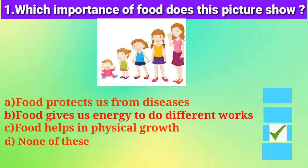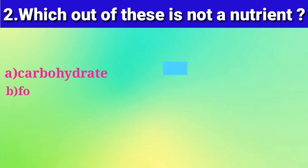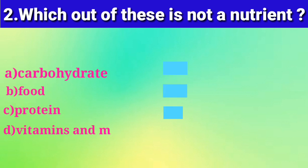The next question is: which out of these is not a nutrient? The options are: carbohydrate, food, protein, or vitamins and minerals. Think and answer. Yes, the right answer is option B — food. Children, food is not a nutrient; rather, it is the source of different nutrients.